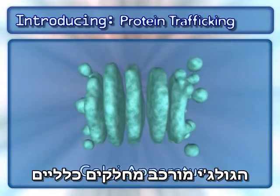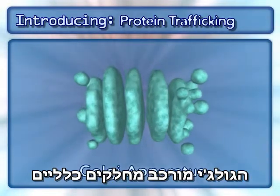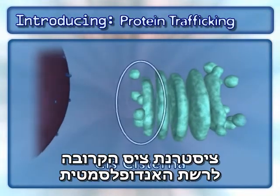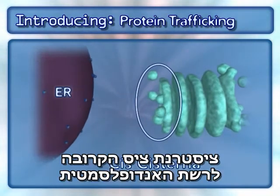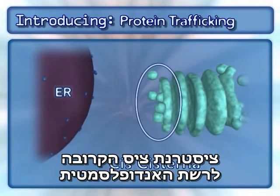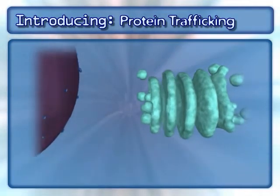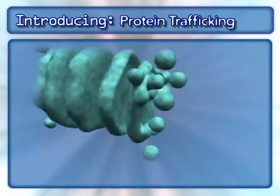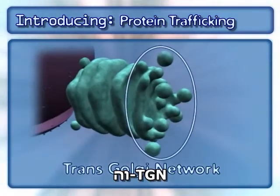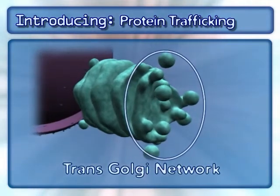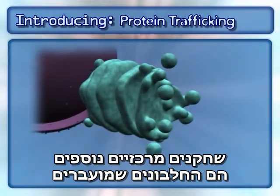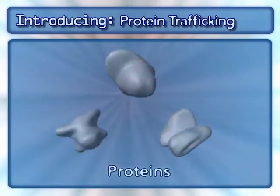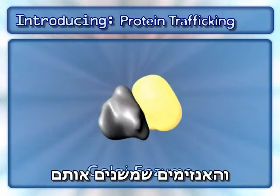The Golgi apparatus consists of general components: the cis-cisterna nearest the endoplasmic reticulum, or ER, the medial and trans-cisternae, and the trans-Golgi network. Other key players in this process are the proteins being transported and the enzymes that modify them.